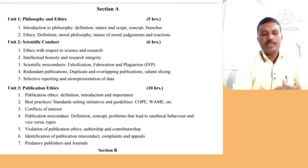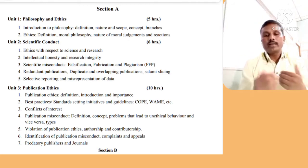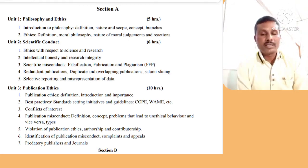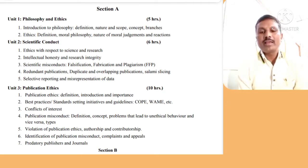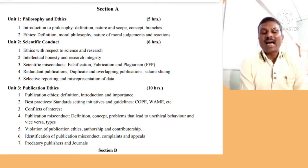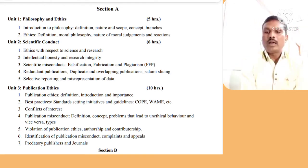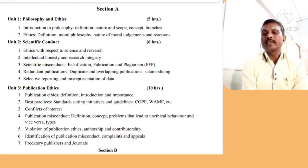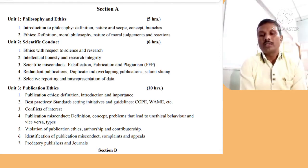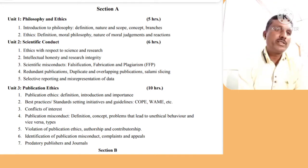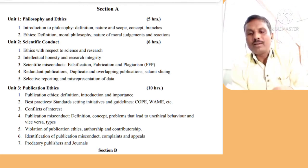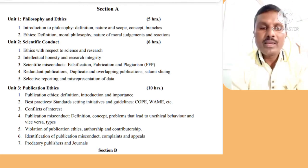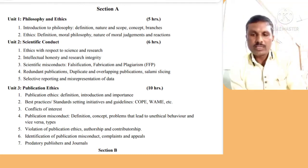Before I begin to talk about the concept, let me give you an introduction to the contents of the course — the syllabus of this paper. Paper number 3, Research and Publication Ethics, coded as RPE, is for 2 credits, each credit carrying 25 marks, making it a 50-mark paper. The examination is conducted by the University and you have 2 hours to write your answers. In all, there are 5 units in this paper, organized into Section A, Section B, and Section C.